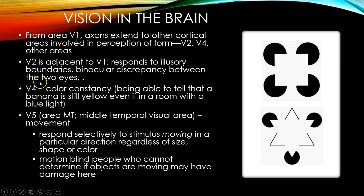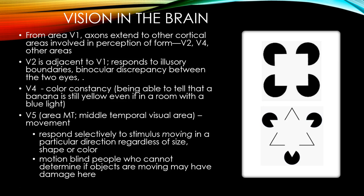V2 is also responsible for processing the binocular discrepancy between your two eyes. Your two eyes are at a slightly different position in your face, so they're seeing the world slightly differently. The brain processes the difference in where things are in the right eye compared to the left eye — this binocular disparity — in order to help with depth perception, to know how far away or how close an object is. V4 seems to be important for color constancy — the ability to tell that a banana is still yellow even in a room with a blue light, keeping colors constant despite different lighting.